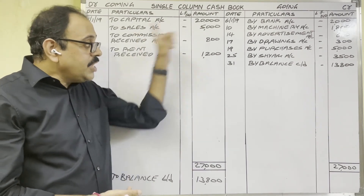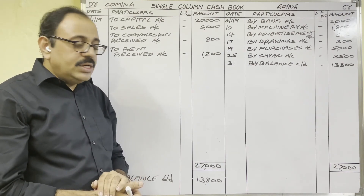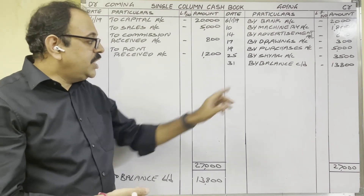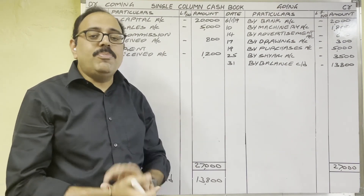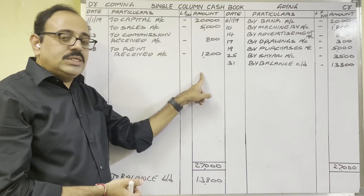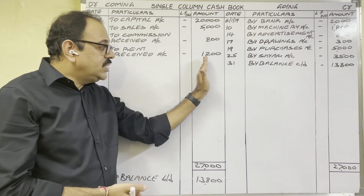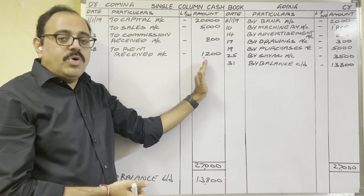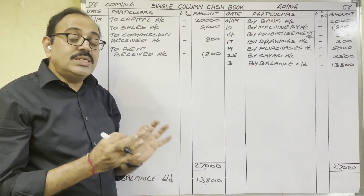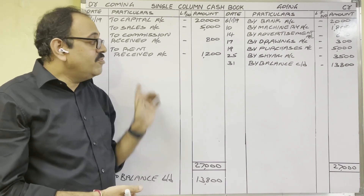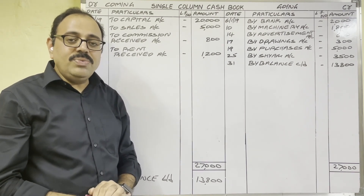Remember one more important point: the cash book should always show a debit balance. Here debit total is more than credit total, so on the credit side we wrote 'By Balance Carried Down'. This amount is a debit balance because debit total is more. The cash book never shows a credit balance, because debit side records receipts and credit side records payments. What we receive — from that only we pay — so payments should be less than receipts. If you get a credit balance, you have made a mistake and must rectify it.